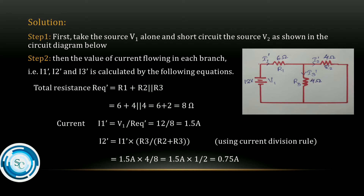We calculate total resistance for R1, R2, R3. R2 and R3 are in parallel. The combined resistance of R2 and R3 is R2 times R3 divided by R2 plus R3, which equals 4 into 4 divided by 4 plus 4, that is 16 divided by 8, which equals 2 ohms. Then total resistance equals R1 plus 2, which is 6 plus 2 equals 8 ohms.